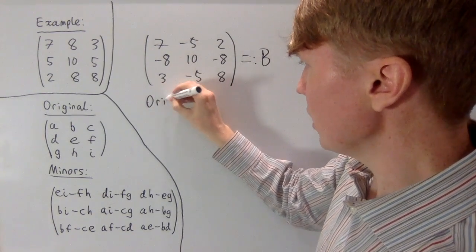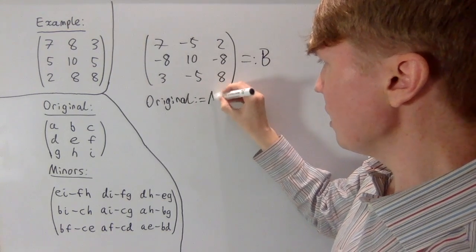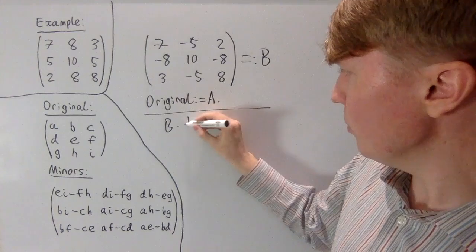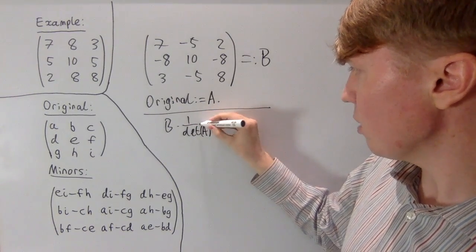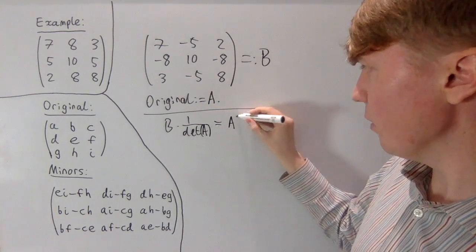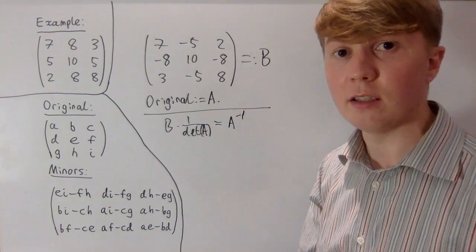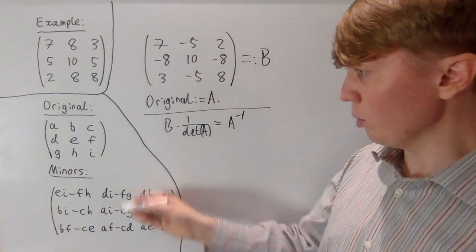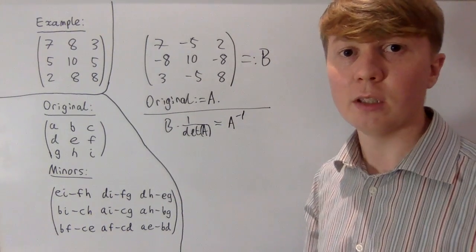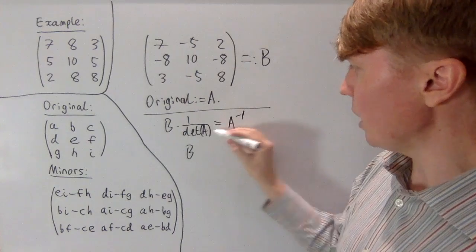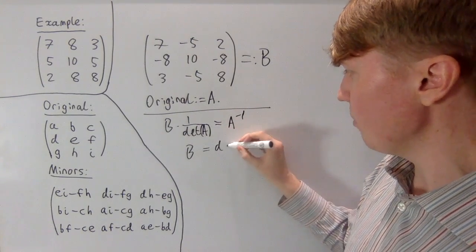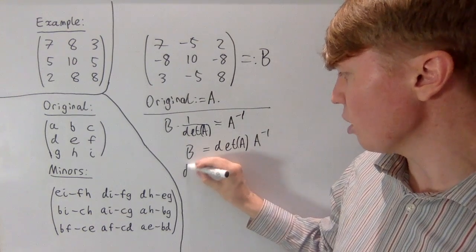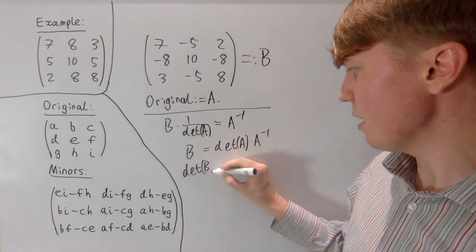Let's call our original matrix A. We know that B multiplied by 1 over the determinant of A gives you A inverse, the inverse of matrix A. There's a hidden assumption here that the determinant of A is non-zero — that it's invertible. You can't do this reconstruction from the minors if A isn't invertible. Multiplying both sides by the determinant of A gives B equals the determinant of A times A inverse.